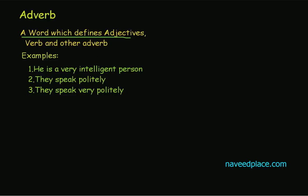Now let's see the examples. He is a very intelligent person. So here 'very' is definitely defining an adjective. So what is adverb? A word which defines adjectives and verbs.